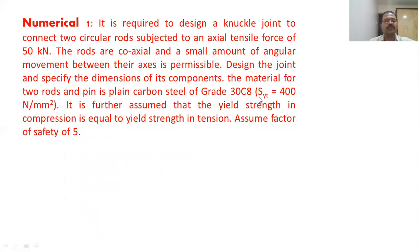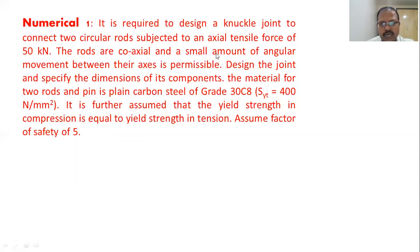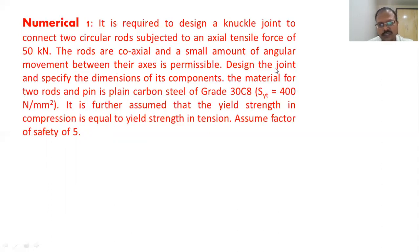Now we will solve a numerical. It is required to design a knuckle joint to connect two circular rods subjected to an axial tensile force of 50 kN. The rods are coaxial and a small amount of angular movement between the axes is permissible — this statement indicates we must design a knuckle joint, since in a cotter joint such angular movement is not possible. Design the joint and specify the dimensions of its components.